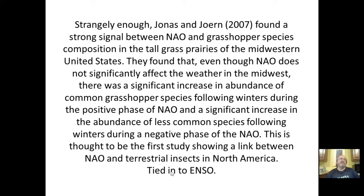Jonas and Juren in 2007 found a strong signal between the NAO and grasshopper species composition in the tall grass prairies of the midwestern US. Even though the NAO does not significantly affect the weather in the Midwest directly, there was a significant increase in abundance of common grasshopper species following winters during the positive phase of the NAO, and a significant increase in less common species following winters during a negative phase. This is thought to be the first study showing a link between the NAO and terrestrial insects in North America.